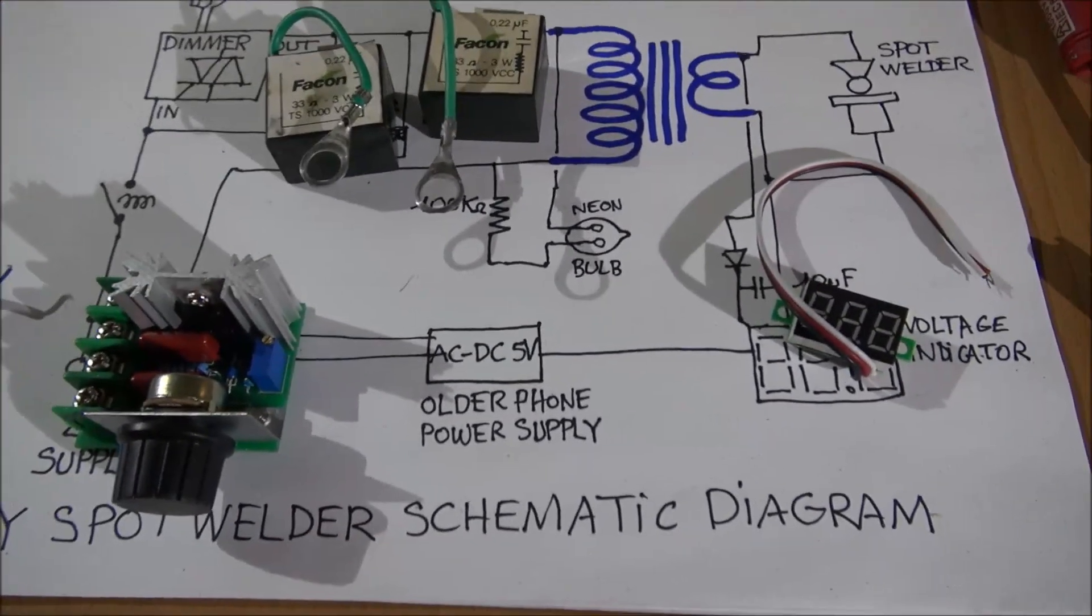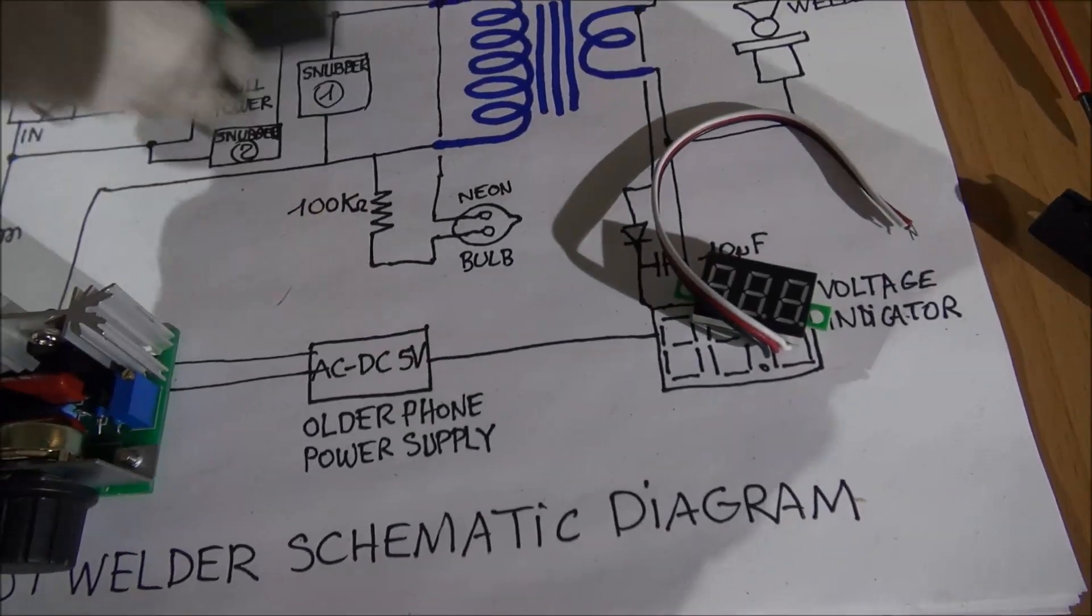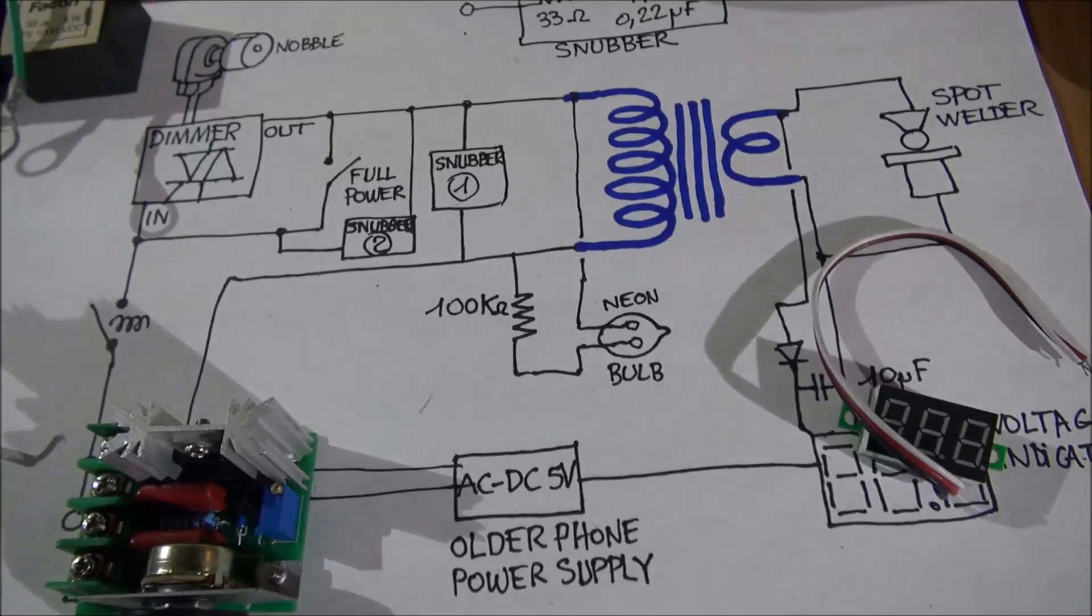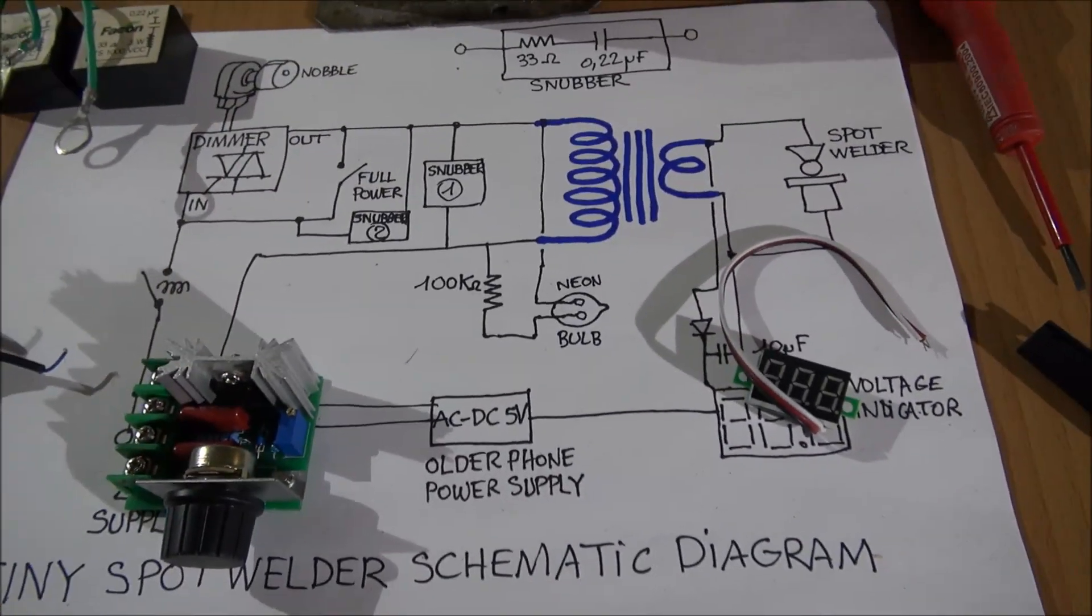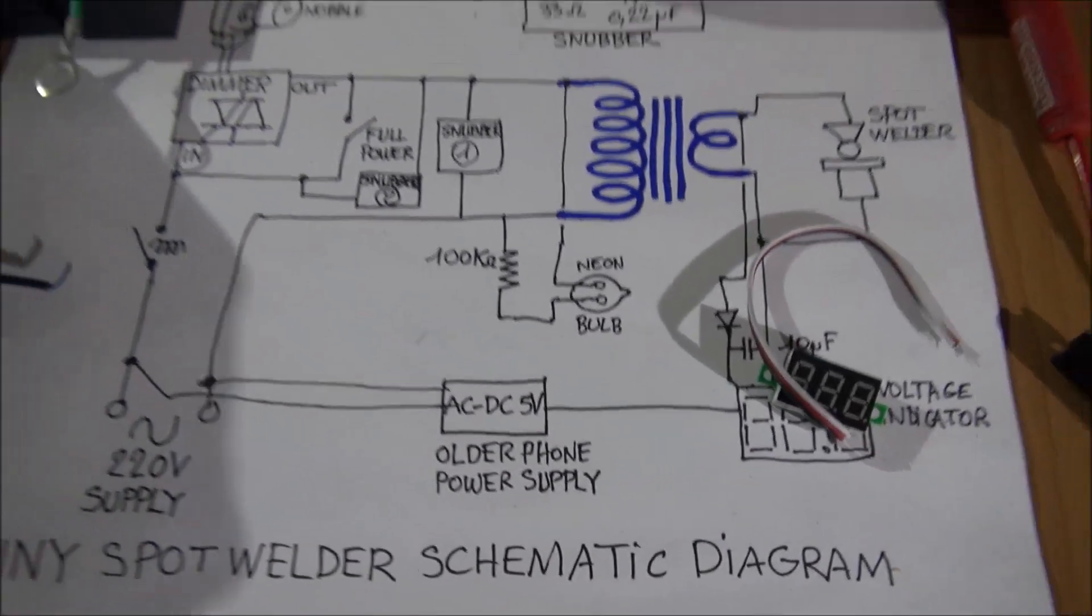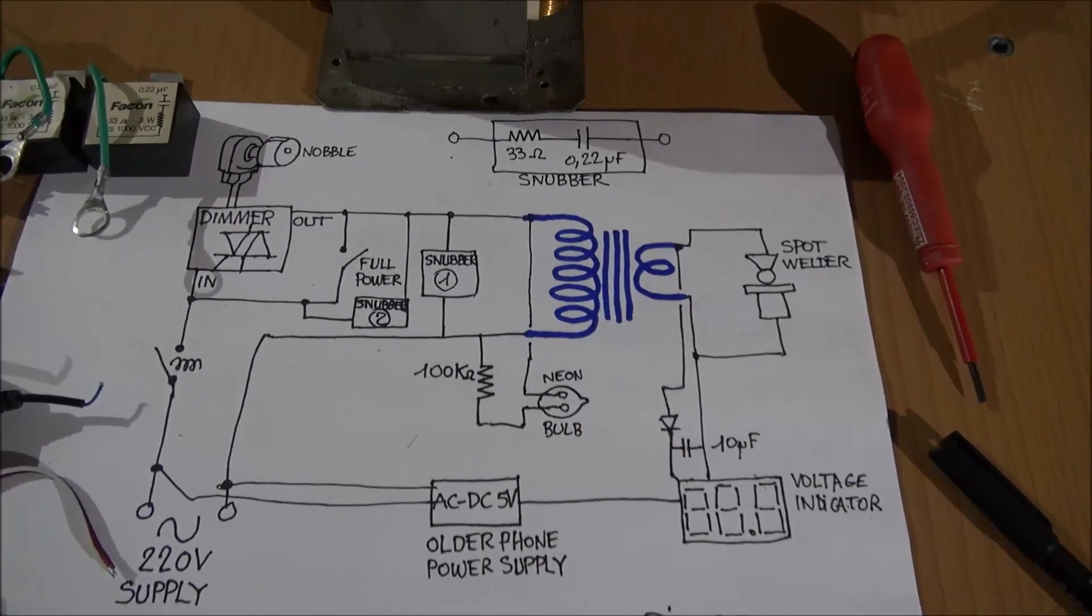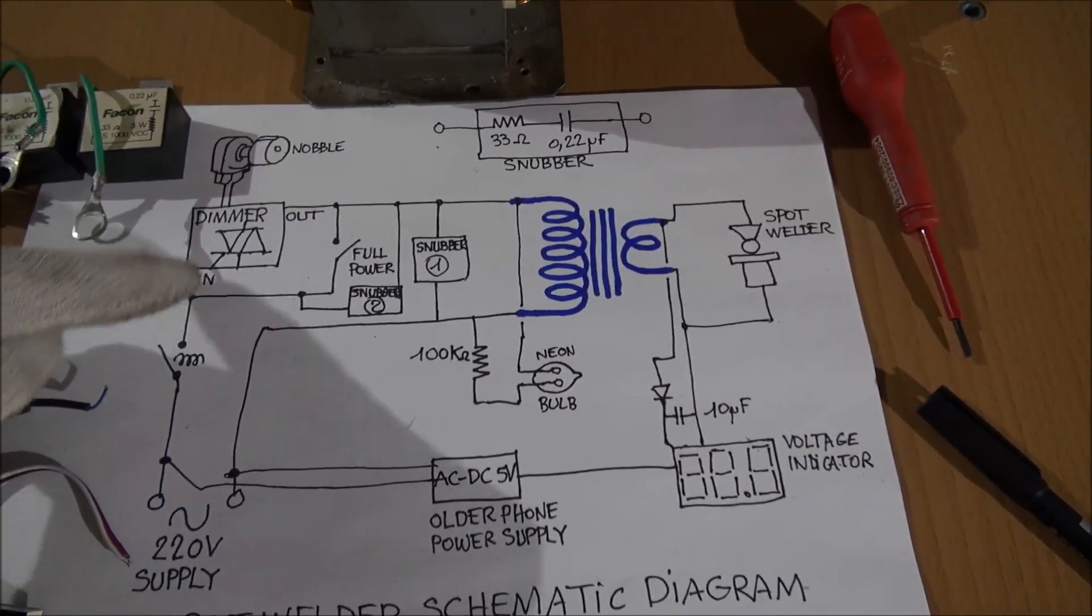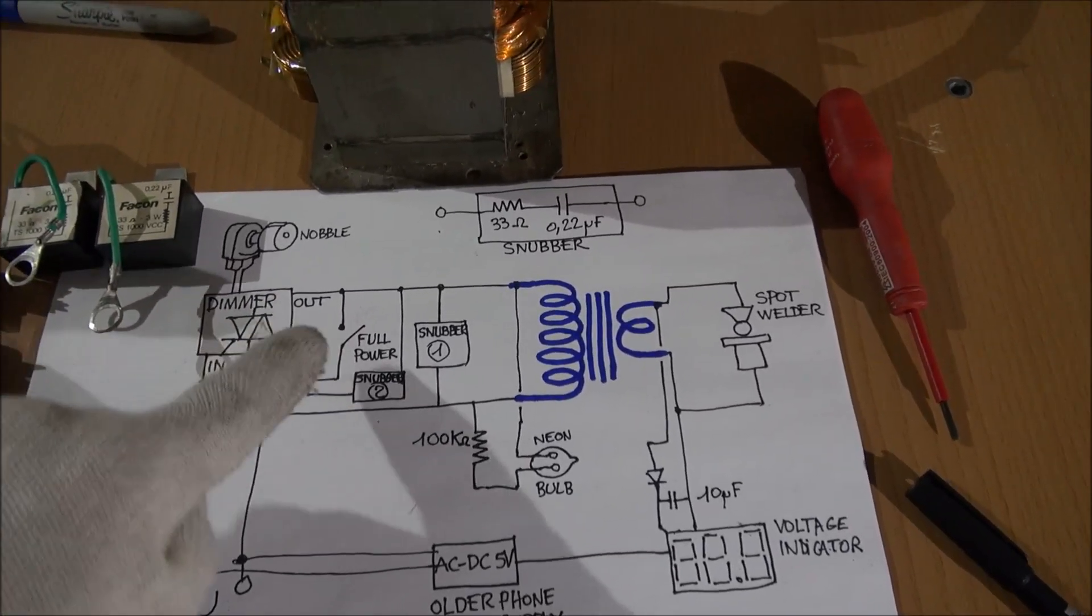So this is all the schematic. It's not difficult to understand how to increase or decrease the power of your transformer to make the welding very easy. This is the schematic. One more time, it's very easy. You know, the in of the dimmer, the out of the dimmer, the full power. This is a permanent switch. You can switch on or switch off if you want the full power or not.